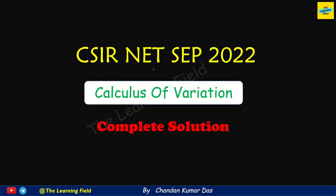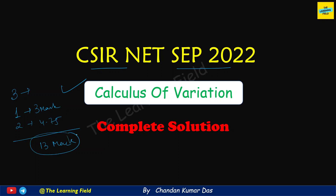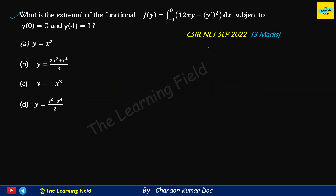Hey YouTube, thanks for visiting. In this session we are going to discuss the questions from calculus of variation from the paper season 8, September 2022. In this paper we get three questions in total: one question is of 3 marks and two questions are of 4.75 marks, so total almost 13 marks comes from the calculus of variation chapter. Let's start to solve the questions from CSIR NET September 2022 calculus of variation. If you like this content then give a like to the session, and if you're new here then consider subscribing to my channel.